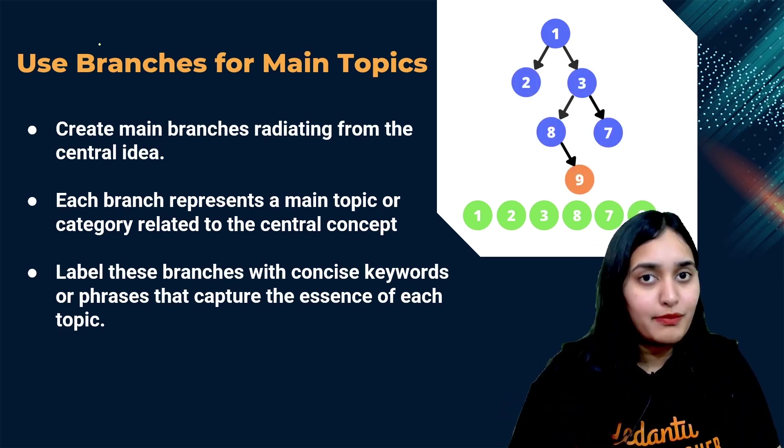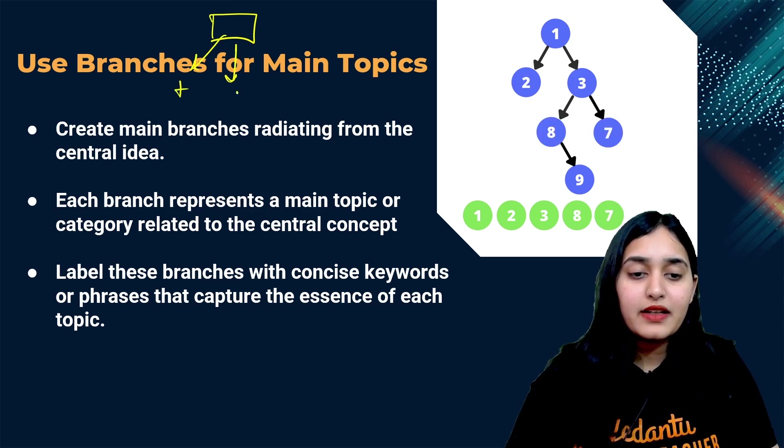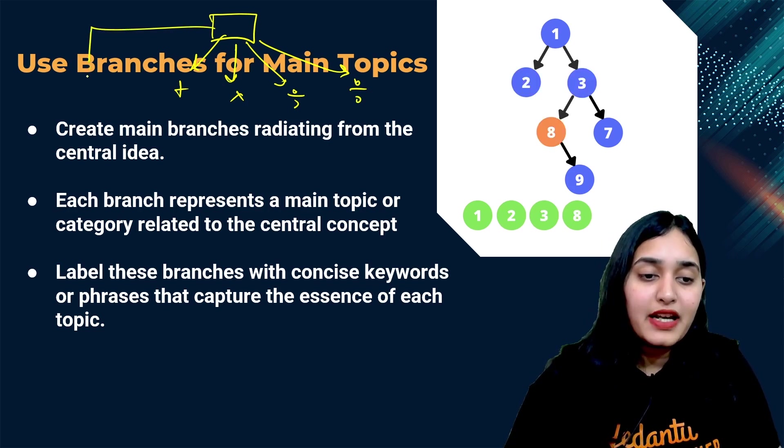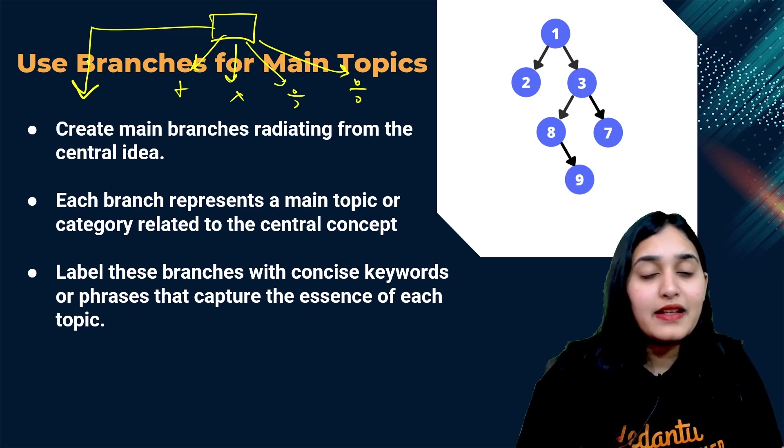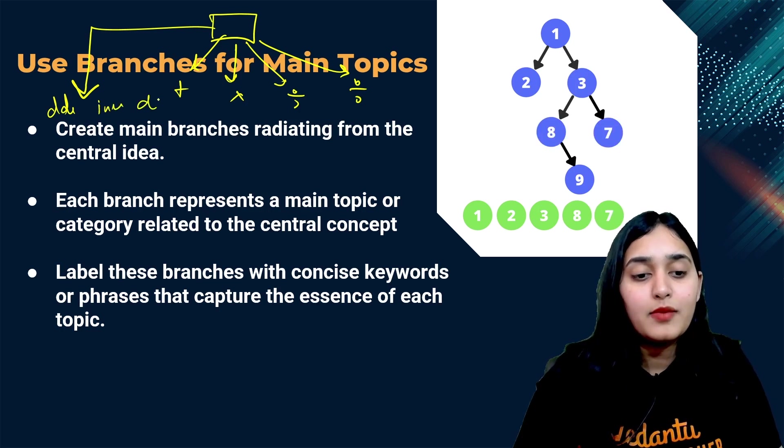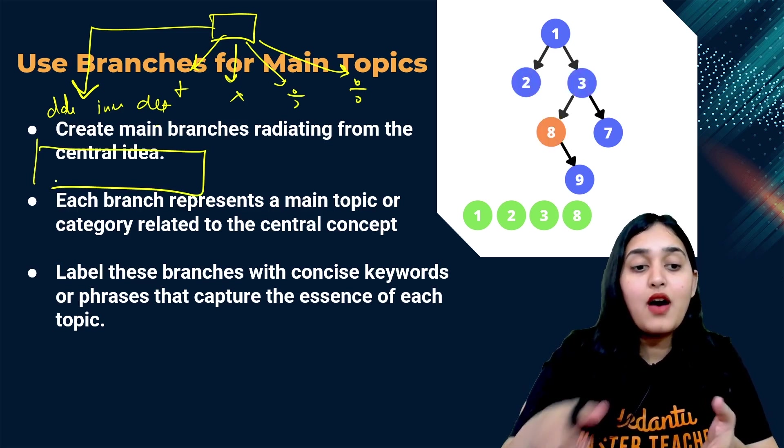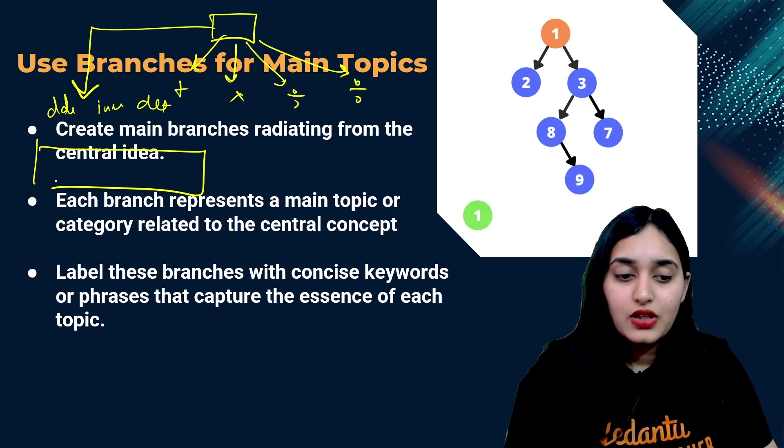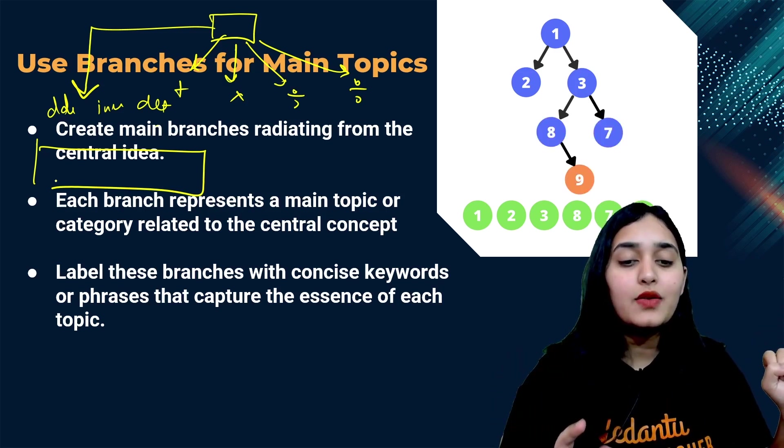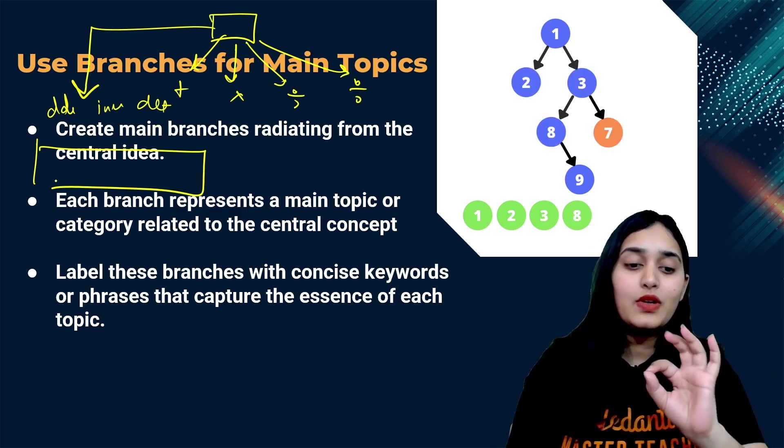So first of all, we basically define the central topic that what are we learning about and then we start using branches of the main topic. For example, suppose you have learned about matrix. Now you can make a flow chart that in matrix, you are going to learn about addition of matrix, multiplication of matrix, division of matrix or subtraction of matrix. Maybe you can make a separate flow chart altogether that inside matrix itself, apart from addition, multiplication, you also have adjoint of matrix, inverse of matrix, determinant of matrix. Then to find out determinant, you can write down the complete formula that how determinant, inverse and all they are related to each other.